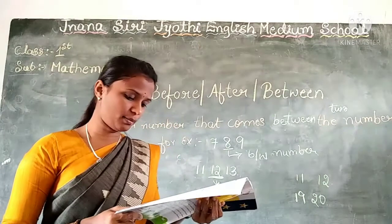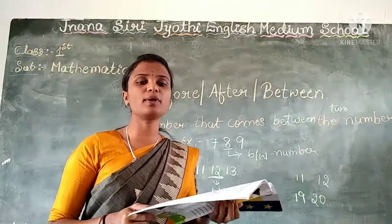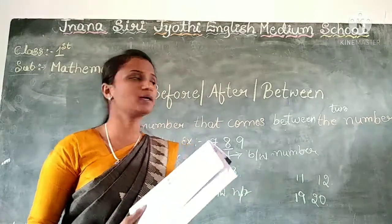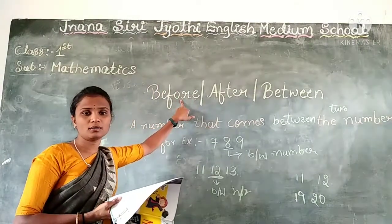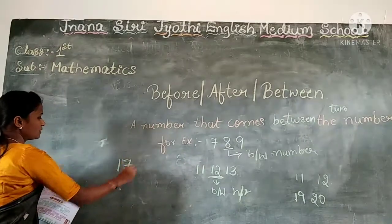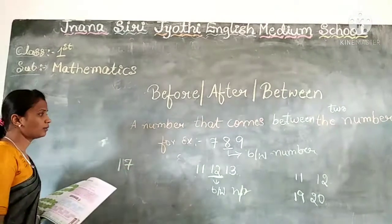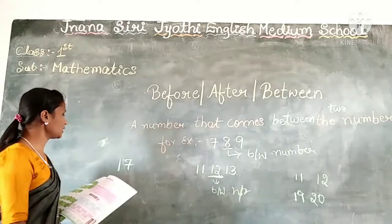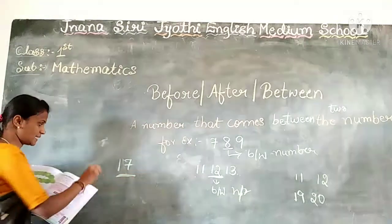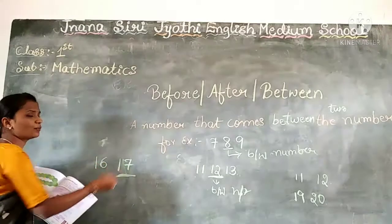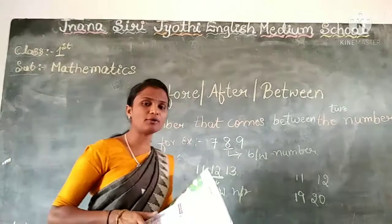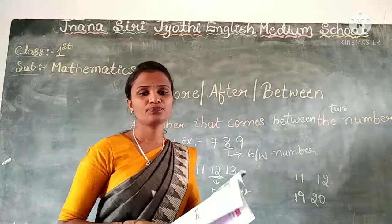Write the number that comes just before the number given in each box. You have to write the before number. I have given 17. Which is the before number for 17? 16. 16 is the before number for 17. Right? Like this, you have to solve the exercise.